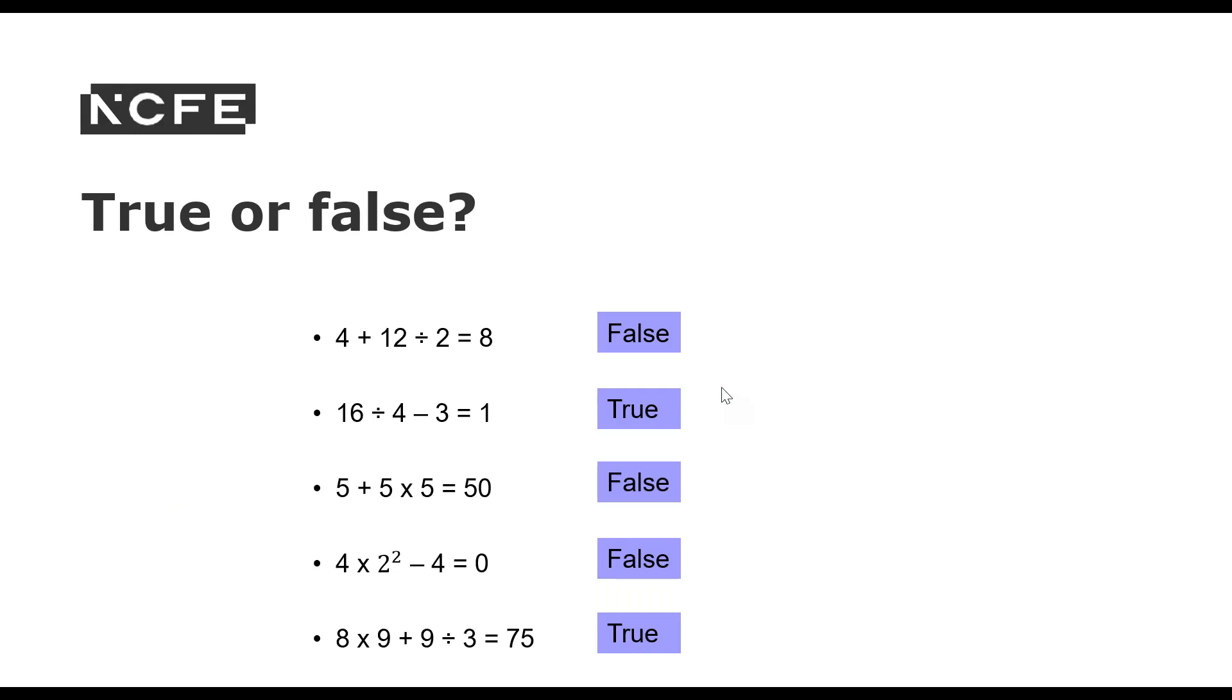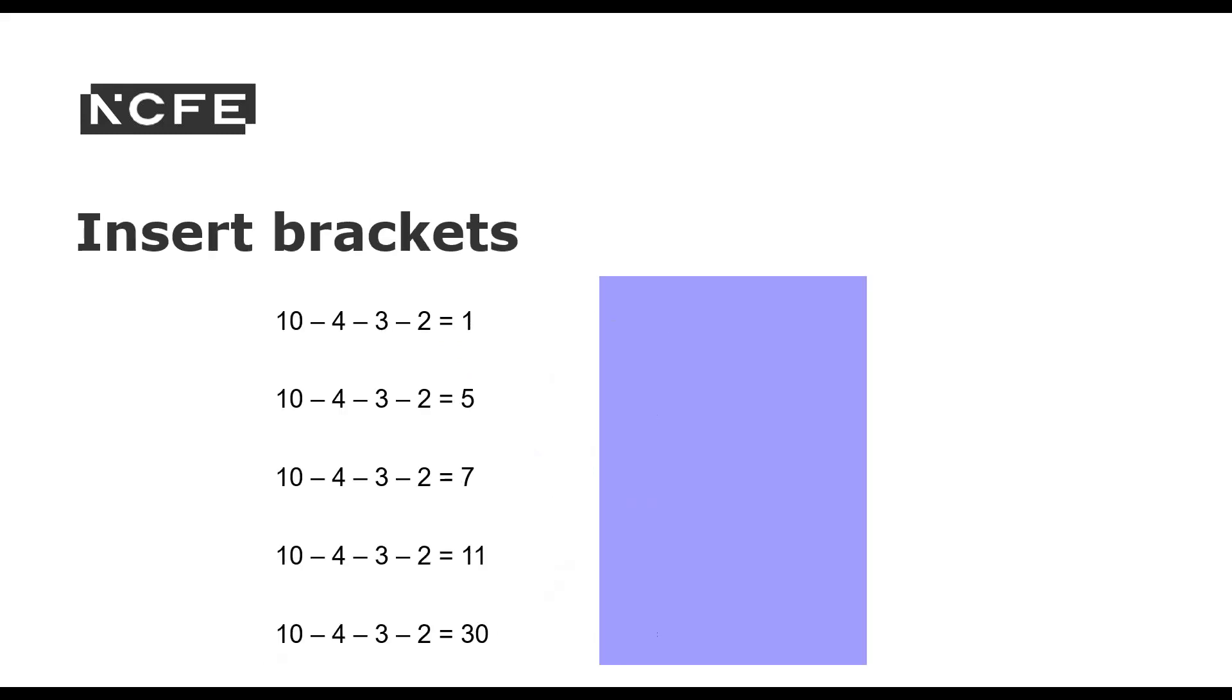Another extension for this is to take a look at the ones that are false here and see if you can ask your learners, well, what is the correct answer then? Or you could also ask them, is there a way of adding brackets to make these false ones true?